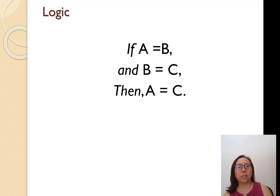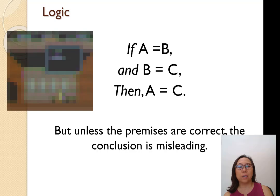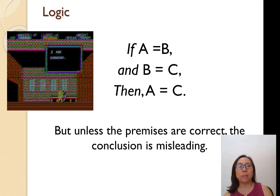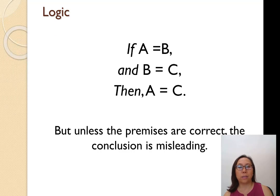Logic looks something like this: if A equals B and B equals C, then A must equal C. The limitation with logic is that unless the first two premises are correct, the conclusion is incorrect or misleading. There is very little room for any error in logic.